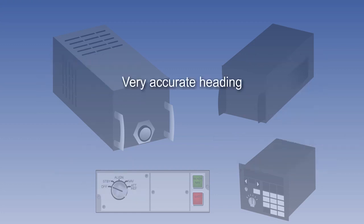INS heading is about 10 times more accurate than previous systems, which were gyromagnetic compasses. Additionally, INS heading is not dependent on earth magnetism.